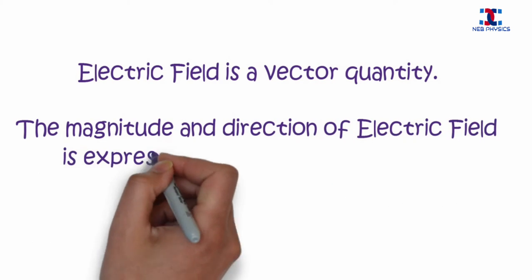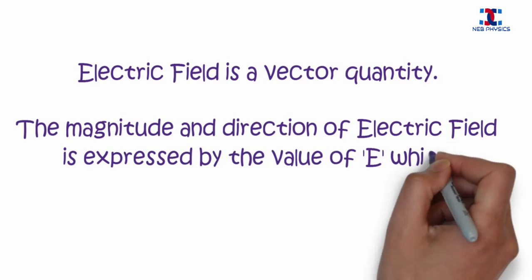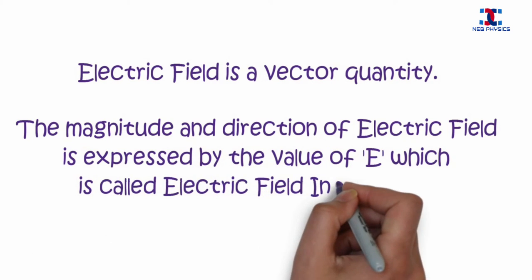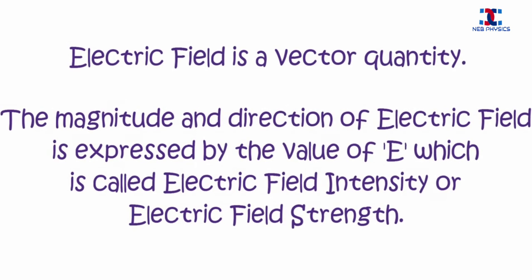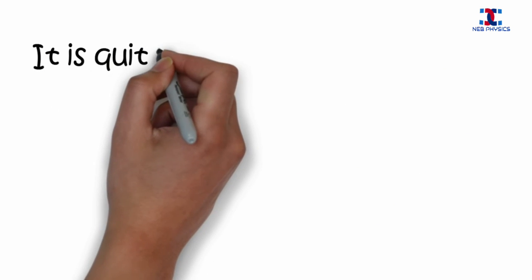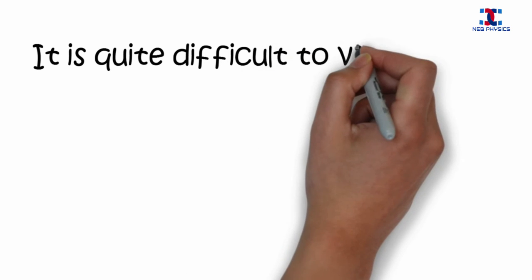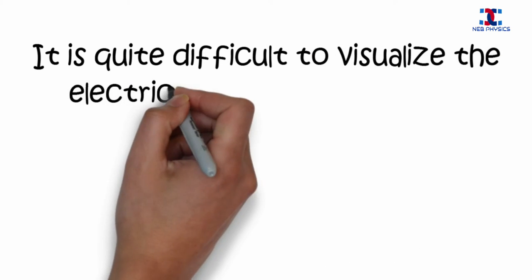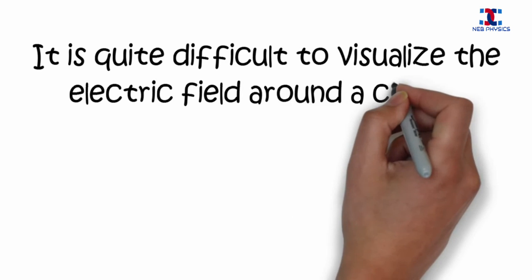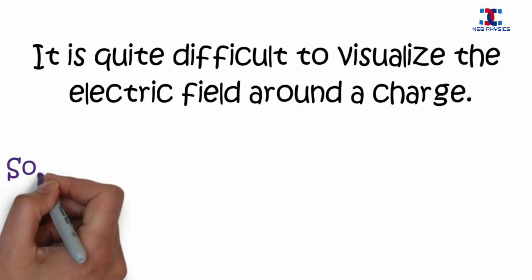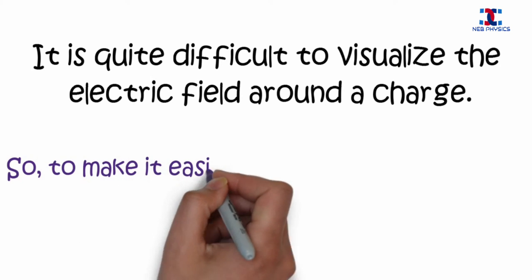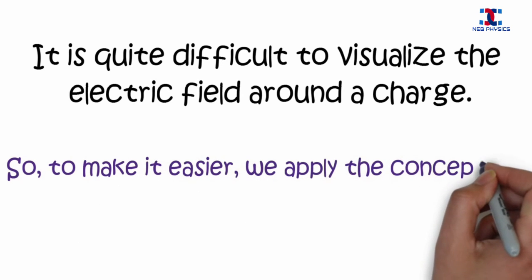The electric field is a vector quantity, and the magnitude and direction of the electric field is represented by capital E, which is called the electric field intensity or electric field strength.